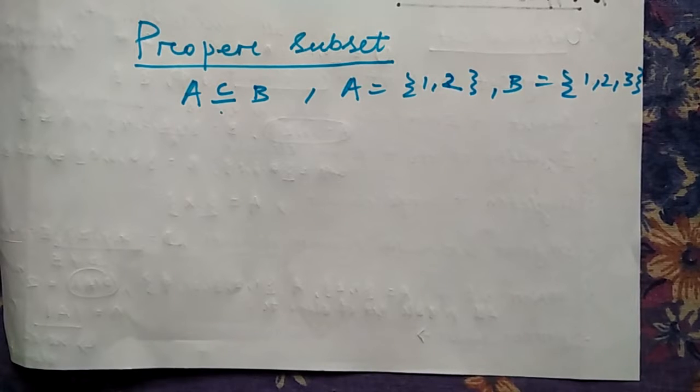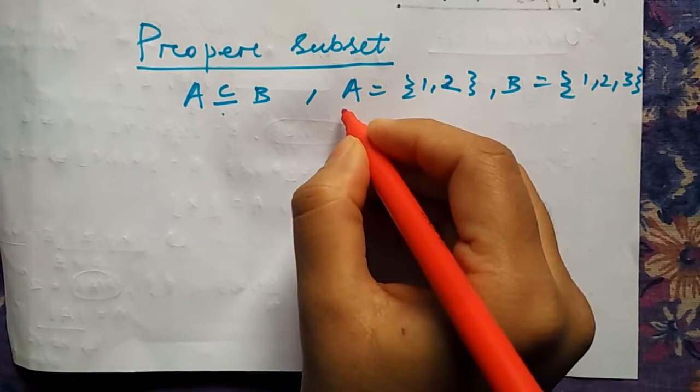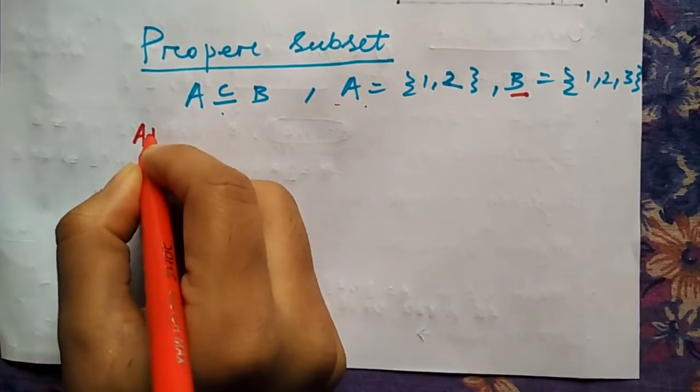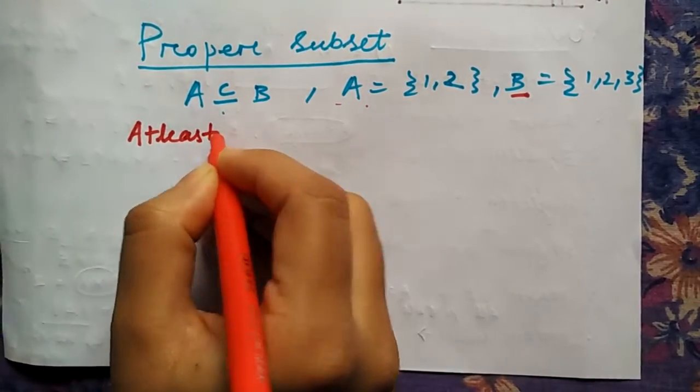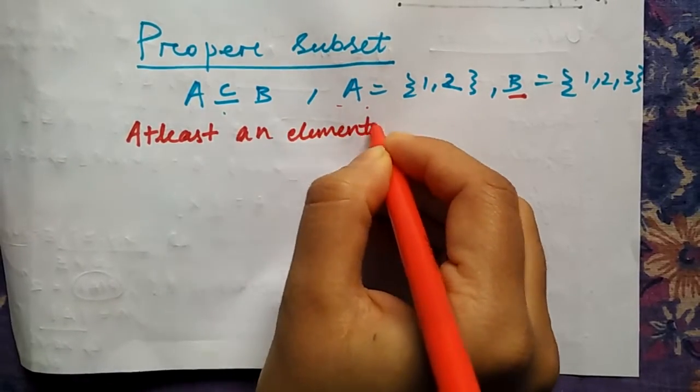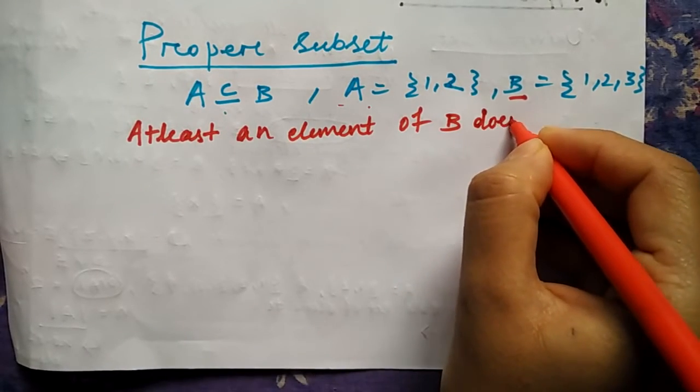Now what is proper subset? According to the definition, proper subset means at least a single element of B should not be there in A. That is the definition.